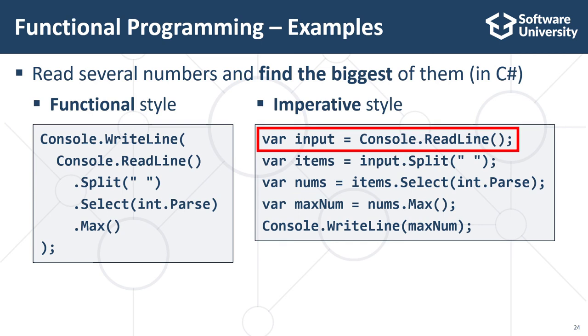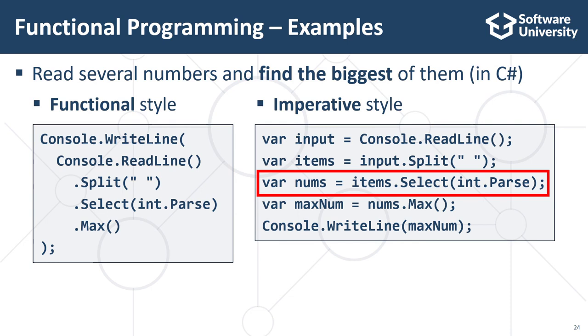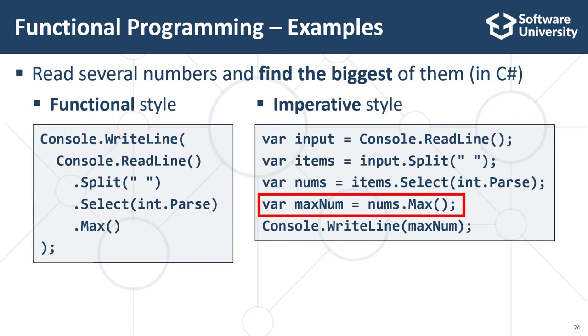This is the first command, reading the input text. The next command splits the input text into space separated elements. Then, we convert the sequence of input numbers from text to integers. The next command finds the biggest number of the integers and finally the last command prints the result.